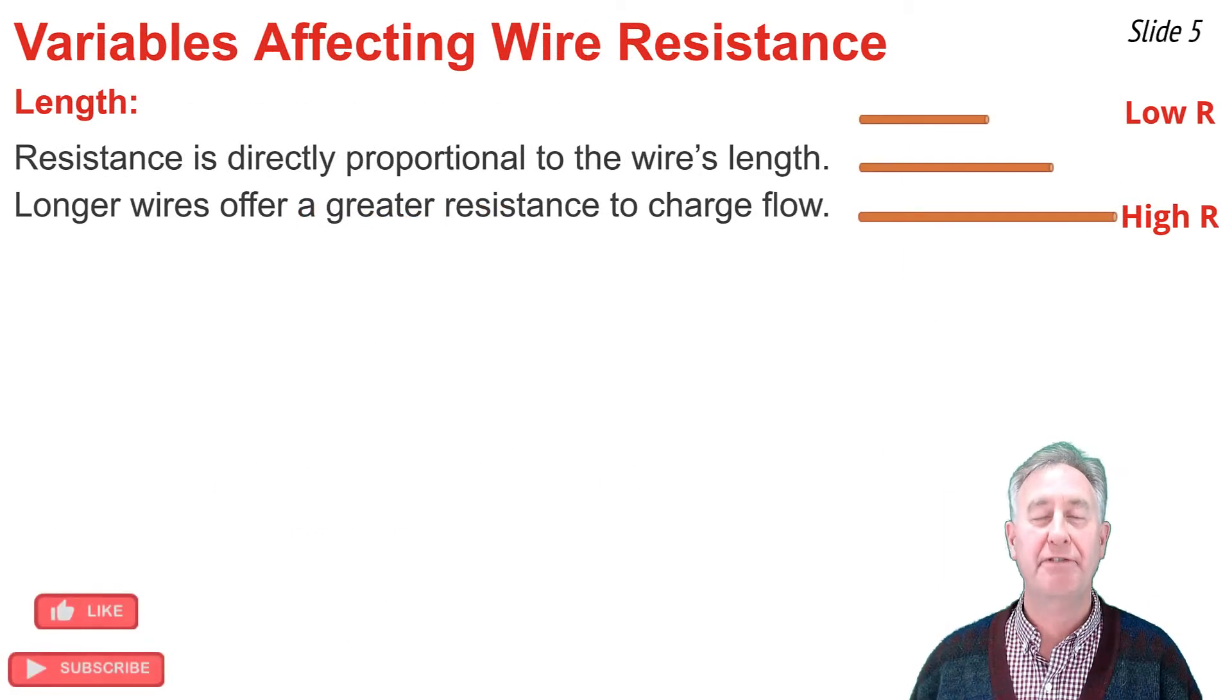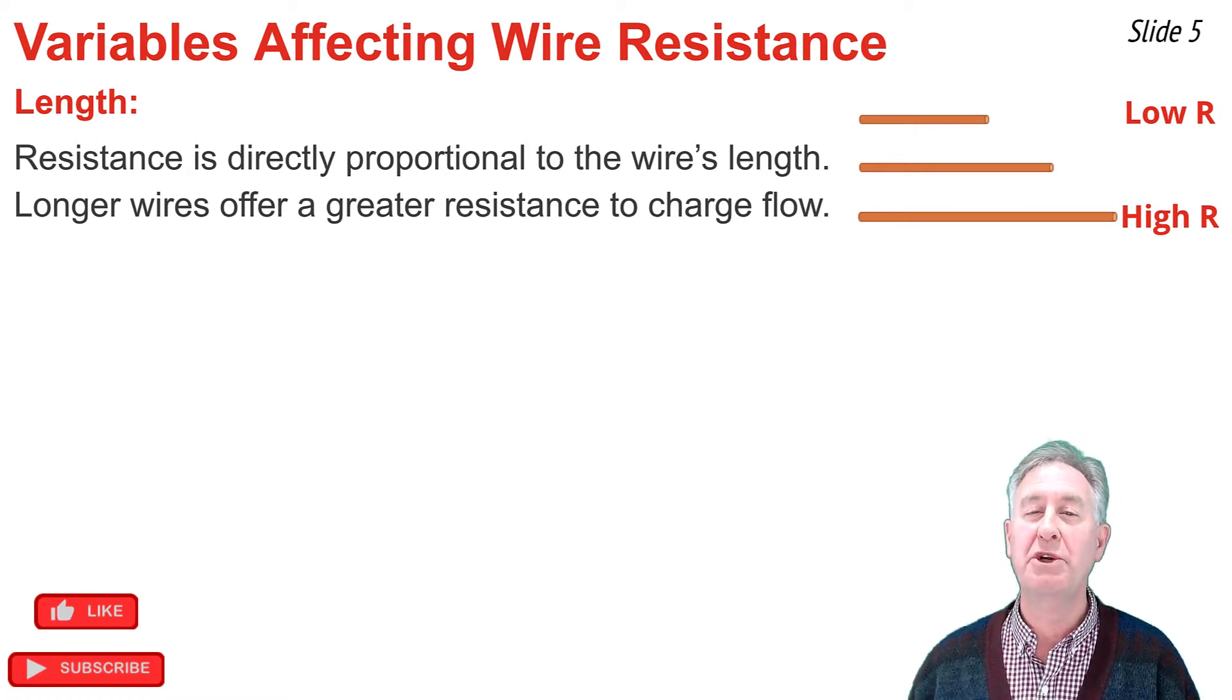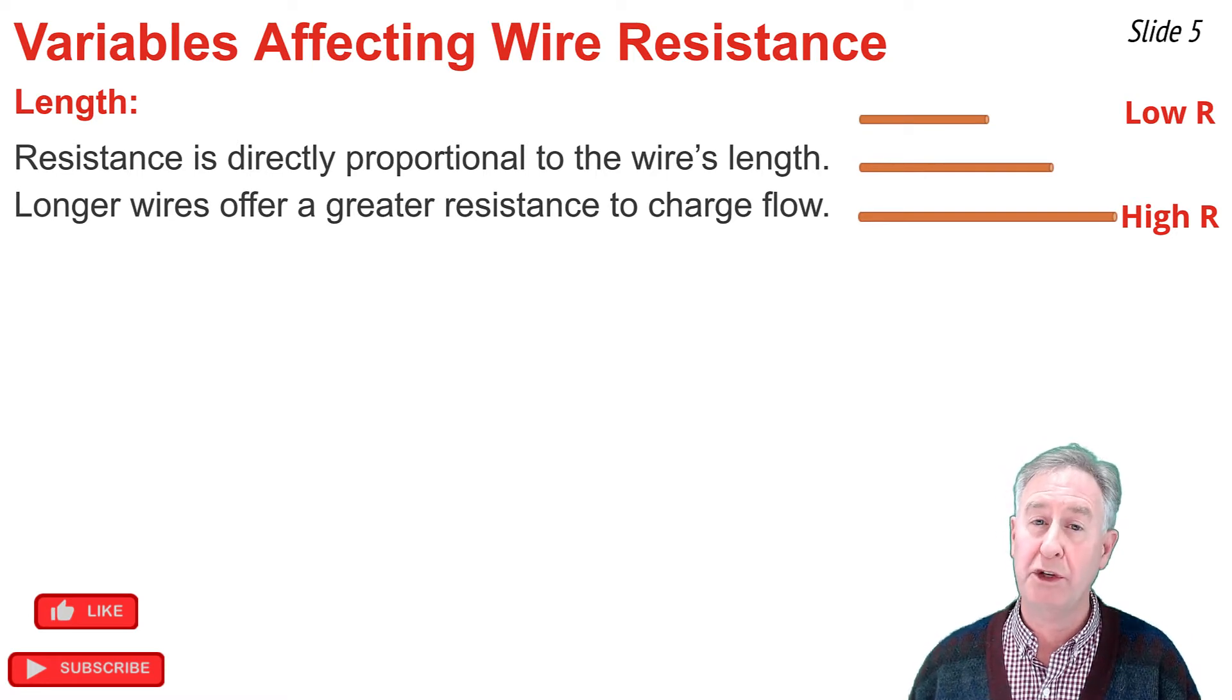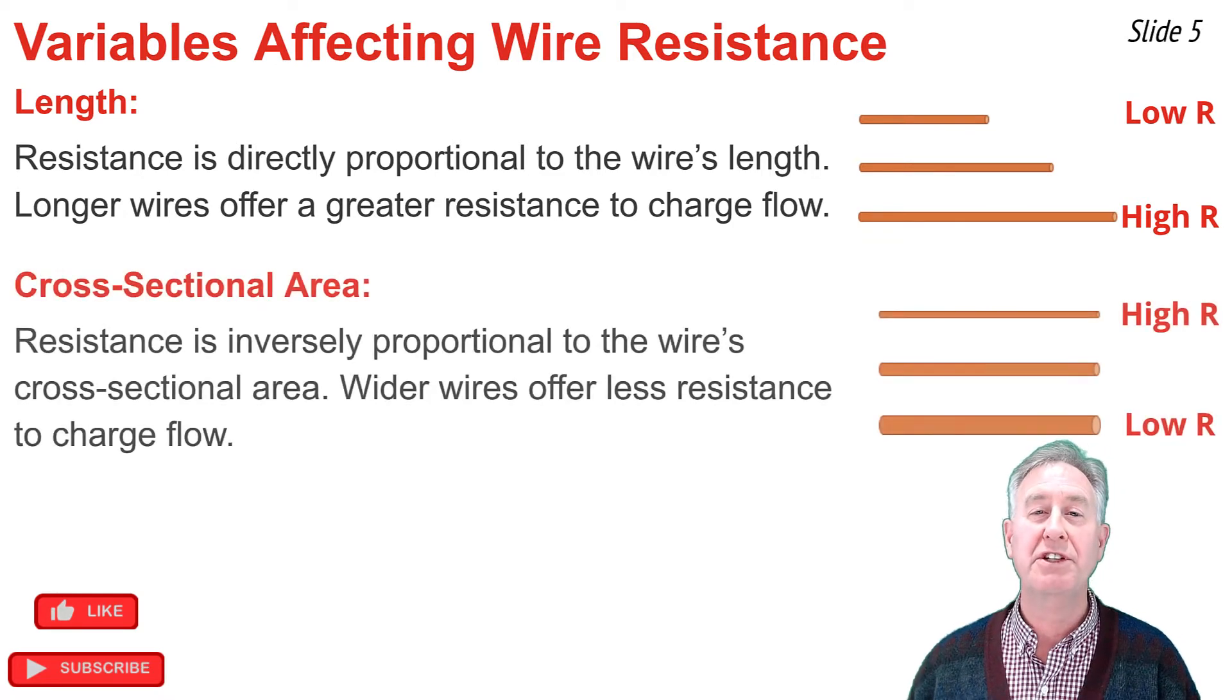The three variables that affect the resistance in a wire are length, cross-sectional area, and the type of material the wire is composed of. Resistance is directly proportional to the length of a wire. A longer wire offers more resistance to the flow of charge than a shorter wire. Resistance is inversely proportional to the cross-sectional area of a wire.